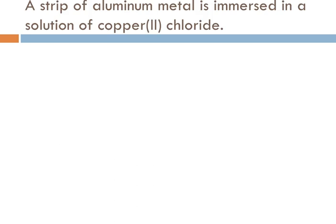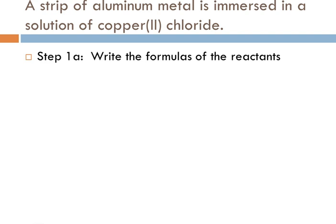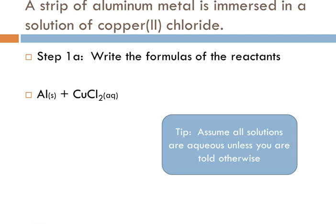So here's the reaction: A strip of aluminum metal is immersed in a solution of copper(II) chloride. The first thing we need to do is write the formulas of the reactants. The aluminum is a metal, it's an element, and it's going to react with CuCl₂, which is in solution. We're assuming that all the solutions are aqueous unless you're told otherwise.